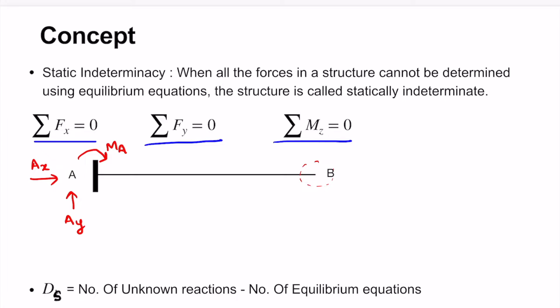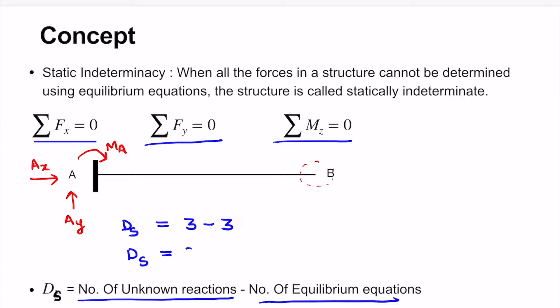From the formula, the degree of static indeterminacy equals the number of unknown reactions minus the number of equilibrium equations. For this cantilever beam, the number of unknown reactions is three and the number of equilibrium equations is also three. Hence the degree of static indeterminacy for this cantilever beam is zero.